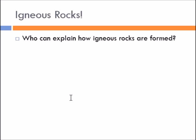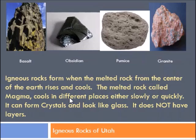Our focus today is igneous, so let's jump right in and talk about igneous rocks. Think of the song: how are igneous rocks formed? Igneous rocks are formed when melted rock from the center of the Earth rises up and cools. The melted rock inside the Earth is called magma, and when it explodes out of the volcano, it's called lava. They form different types of rocks whether they form inside or outside of the Earth.